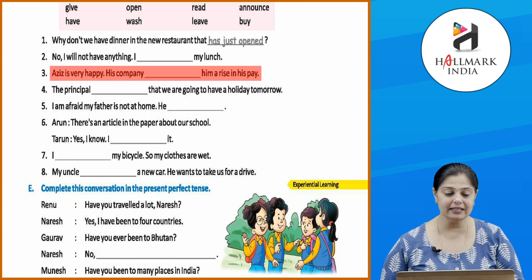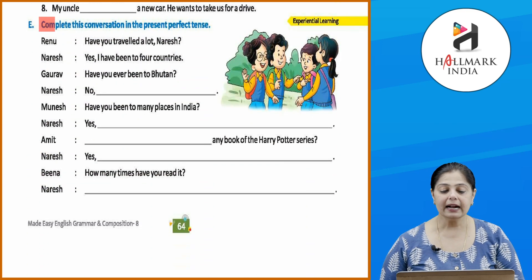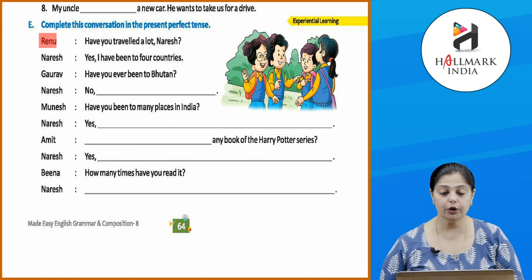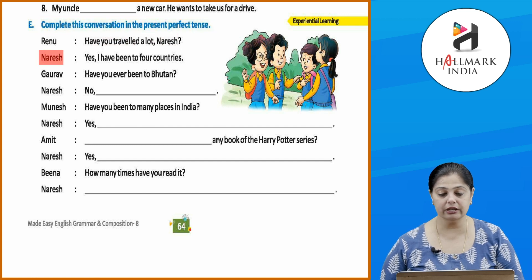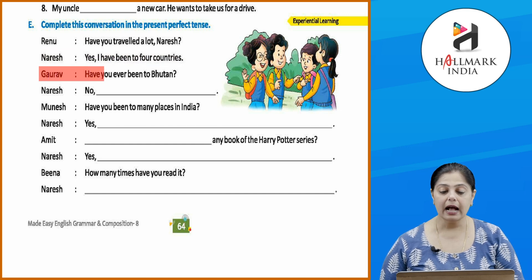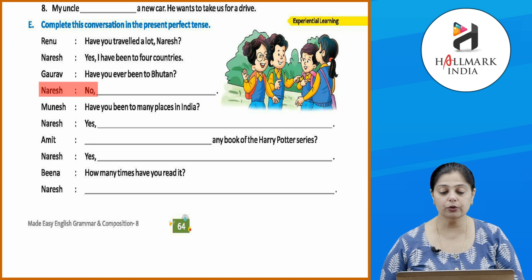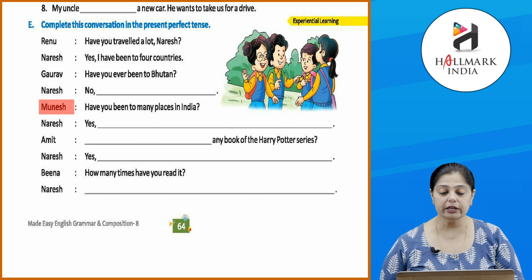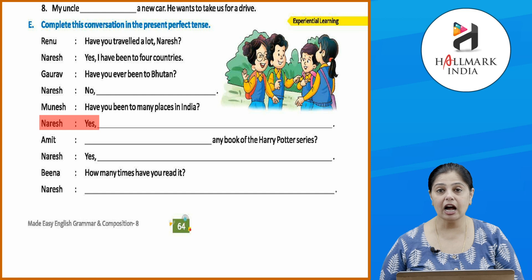Let's complete sentences with 'just' and the present perfect tense. Example: 'Why don't we have dinner in the new restaurant that has just opened?' 'No, I will not have anything — I have just had my lunch.' 'Aziz is very happy — his company has just given him a raise in his pay.' Now do the remaining ones using the help box, applying the rules correctly.